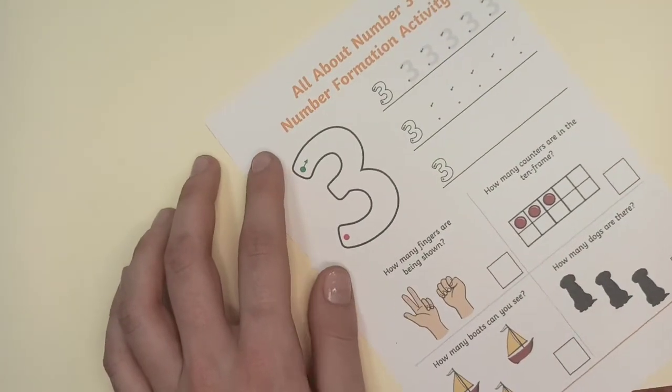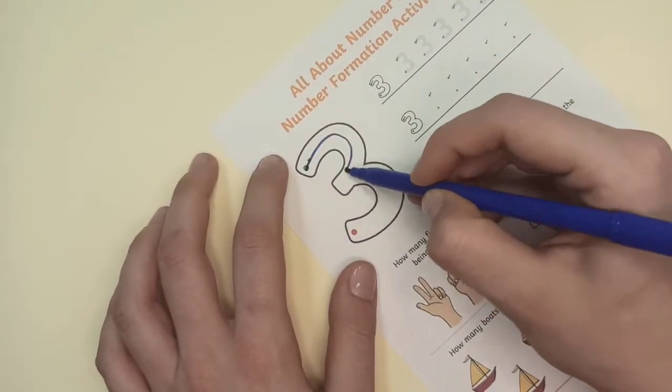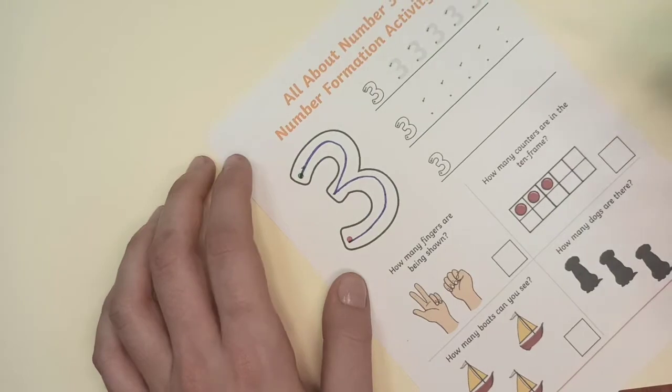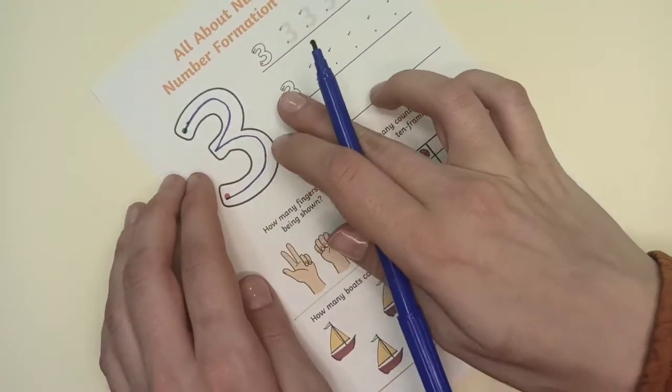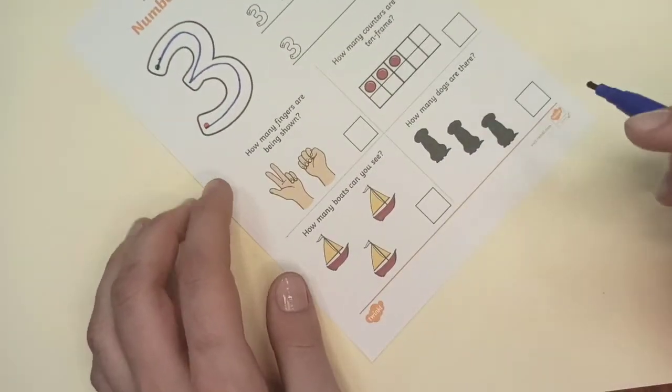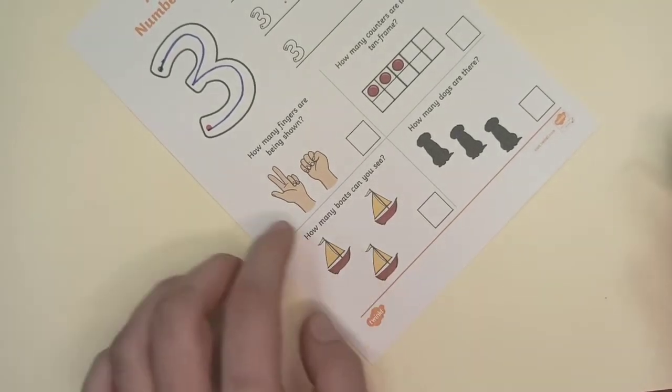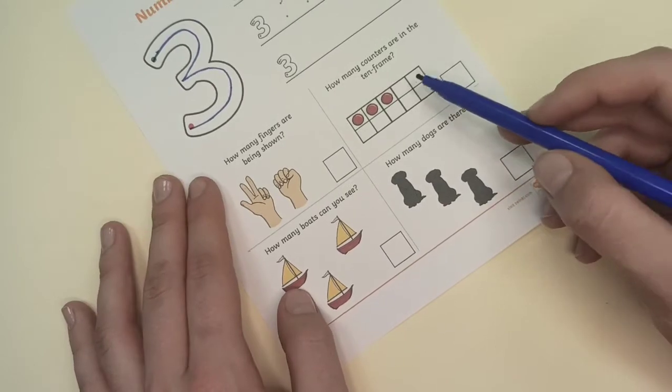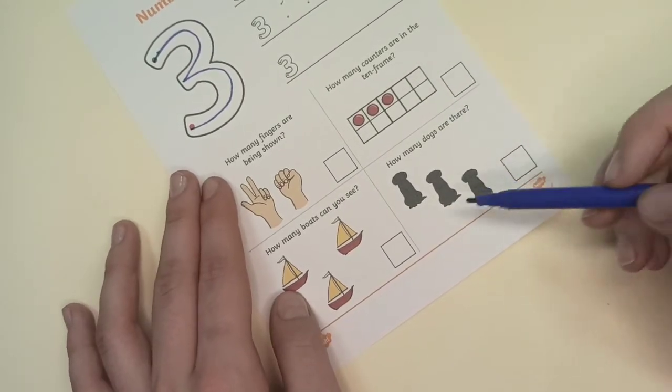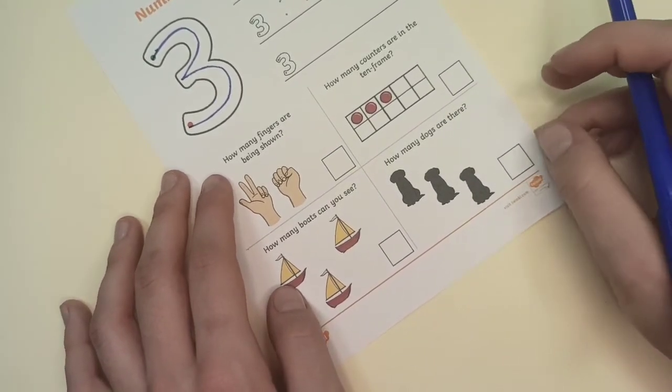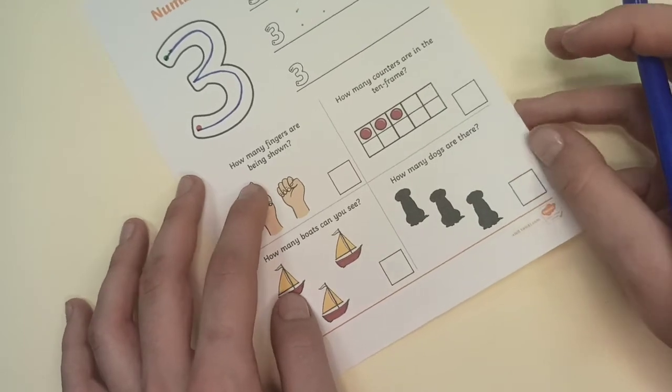All about number 3. Let's trace number 3 here. Can you trace those lines and count how many fingers are being shown, how many bolts can you see? How many counters are in the 10 frame and how many dogs are there? Can you write all of this by yourself?